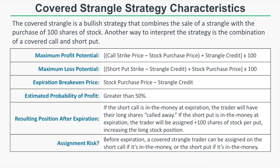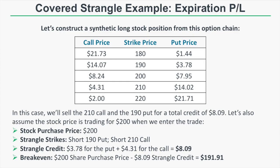In terms of assignment risk, a covered strangle trader can be assigned in the short call or short put if either is in the money. If assigned in the short call, you effectively sell shares at the call strike price. If assigned in the short put, you buy 100 shares at the put's strike price.